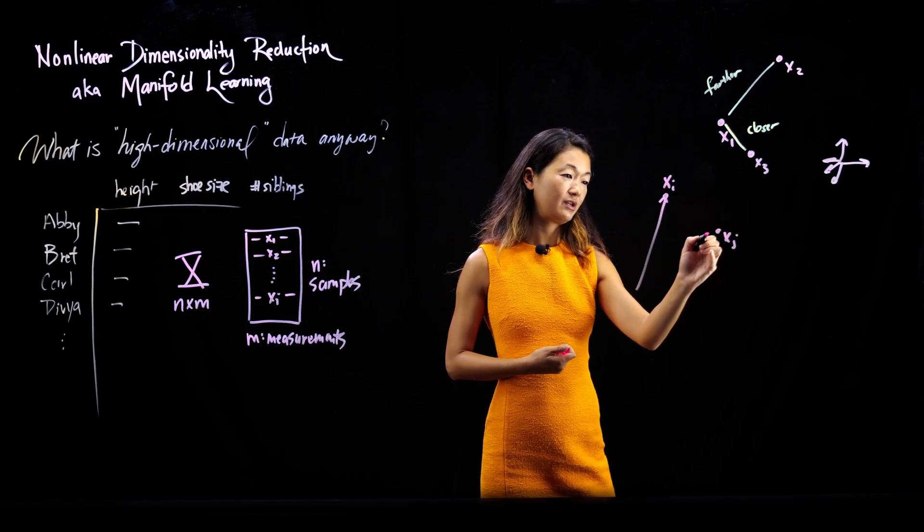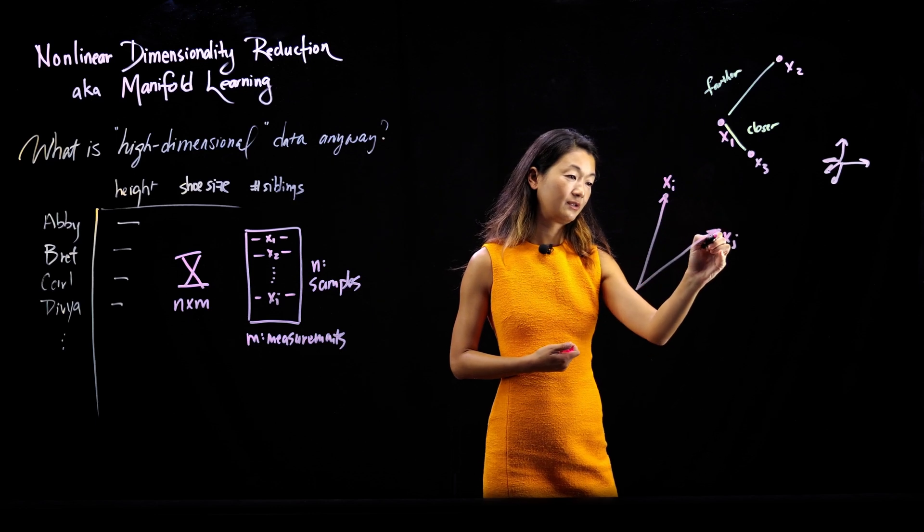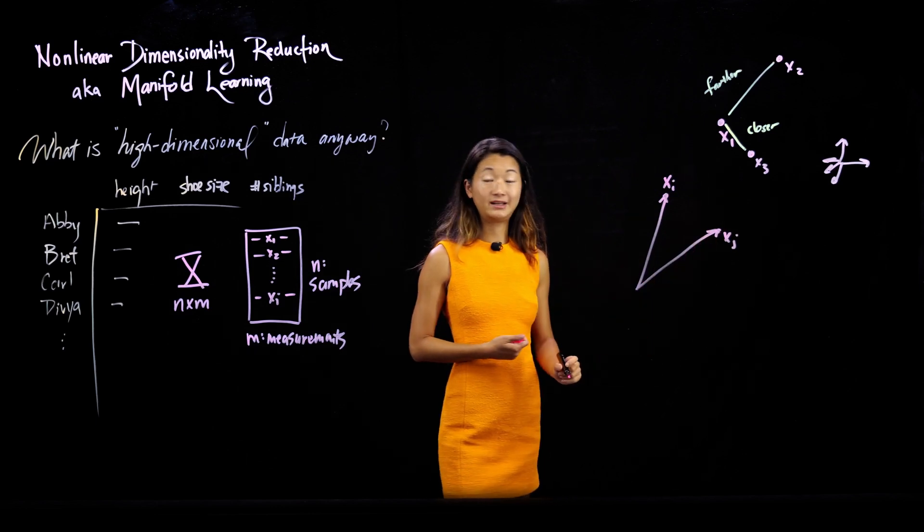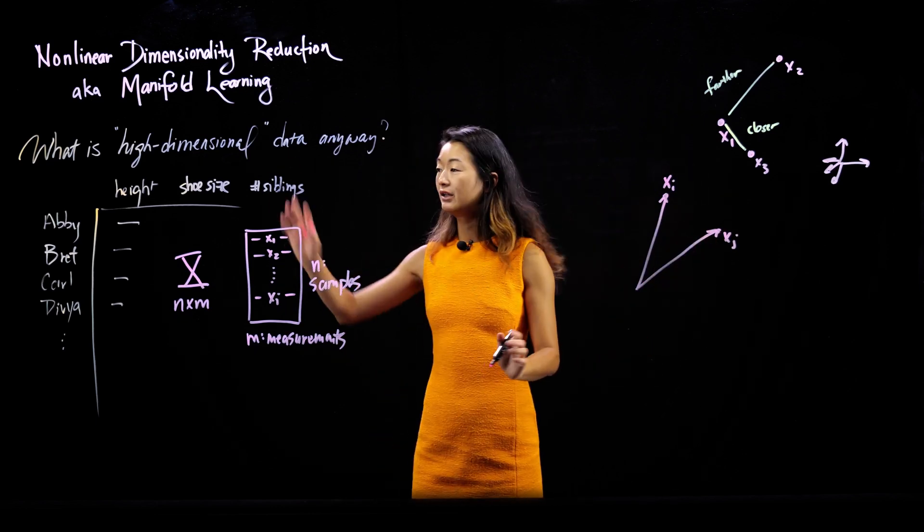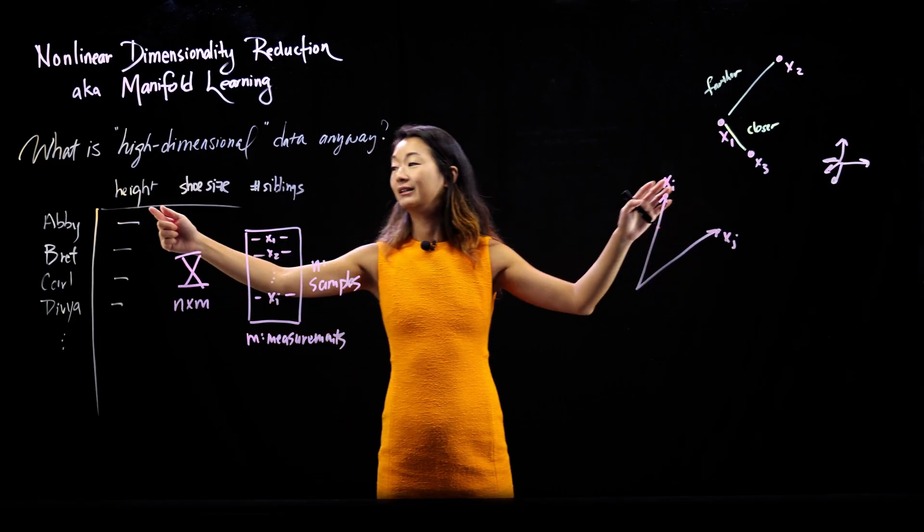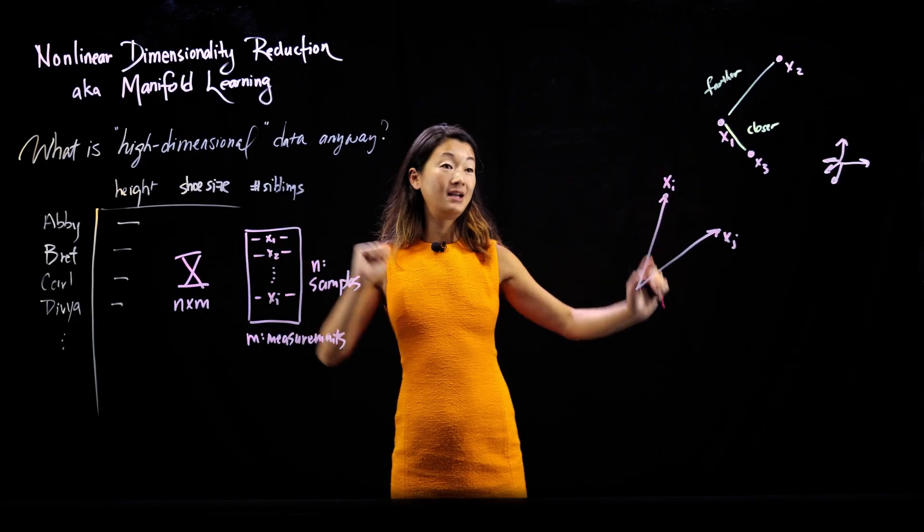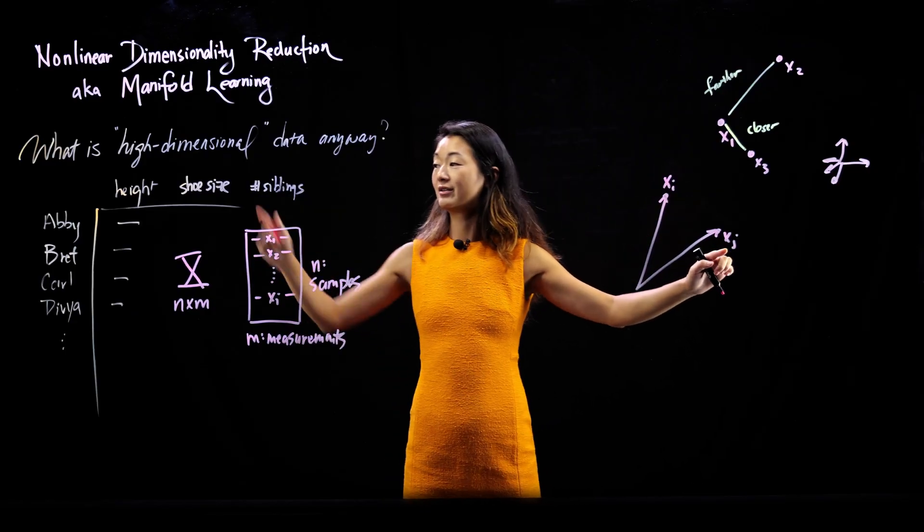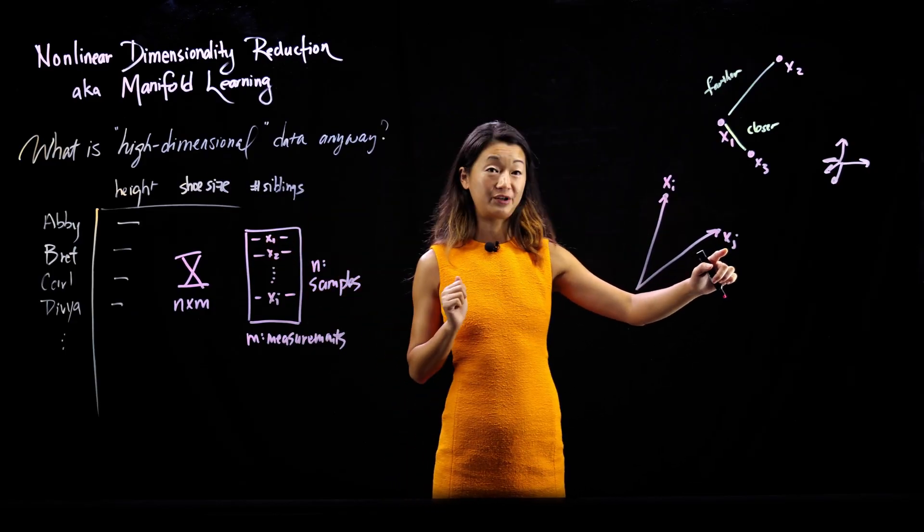So in the analogy of my people example over here, xi would just be the list of height, shoe size, and number of siblings for person i. And xj would be the list of height, shoe size, and siblings for person j.